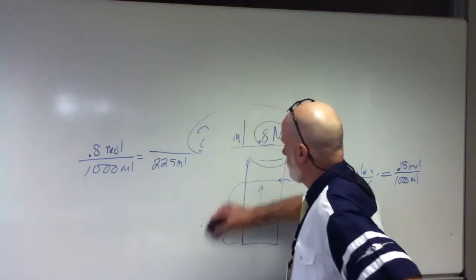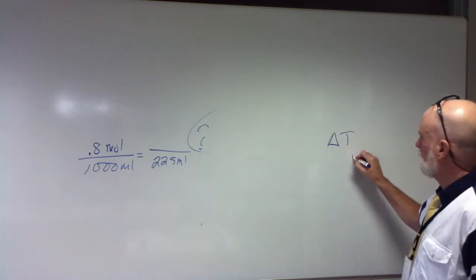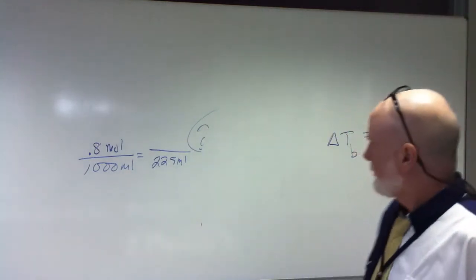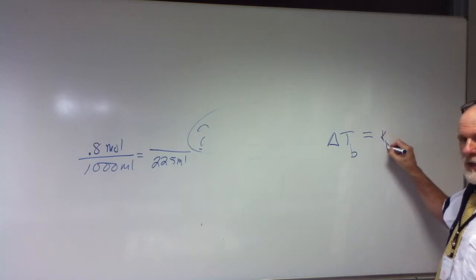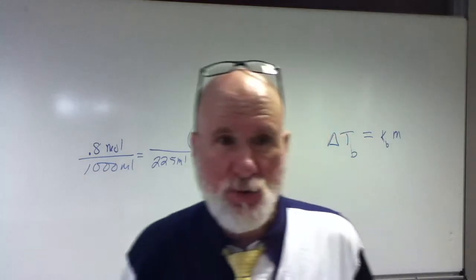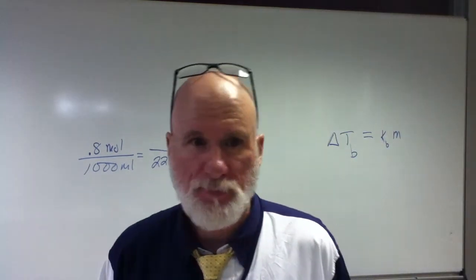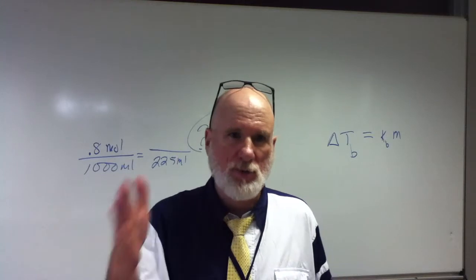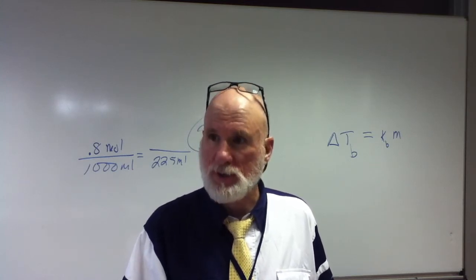If I have this equation, you'll have problems like this where they're going to ask you for freezing point or boiling point depression, and then they'll ask you for the new boiling point. So, for instance, I know that this is going to equal KB, that's the constant, and then times the molality of the solution.